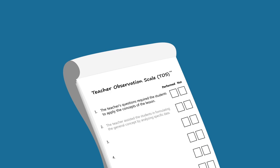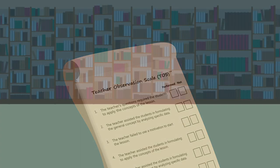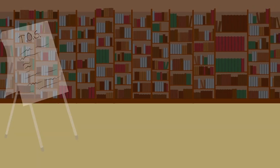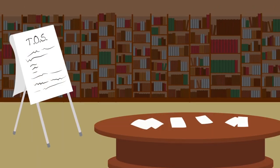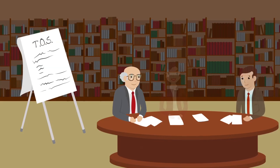TOS uses a straightforward checklist that any classroom observer can complete. Items on the scale, as well as weights and ratings, were chosen and calibrated by highly experienced teachers and educators.